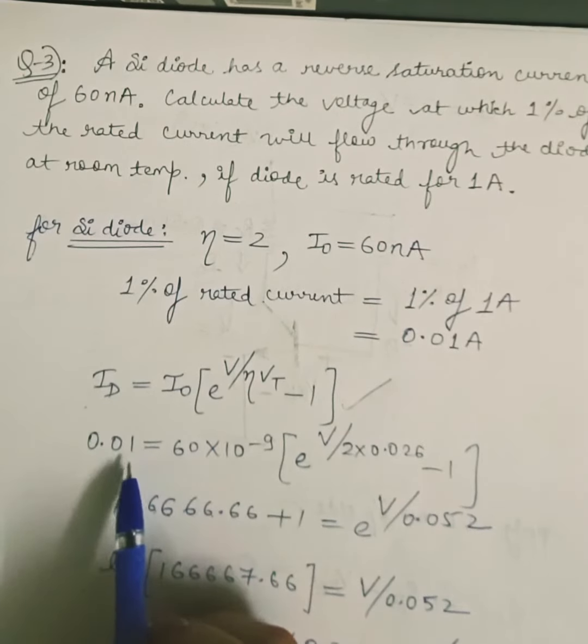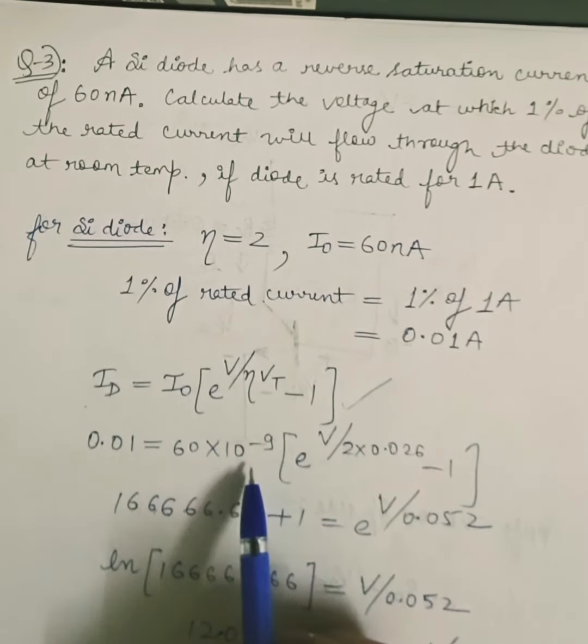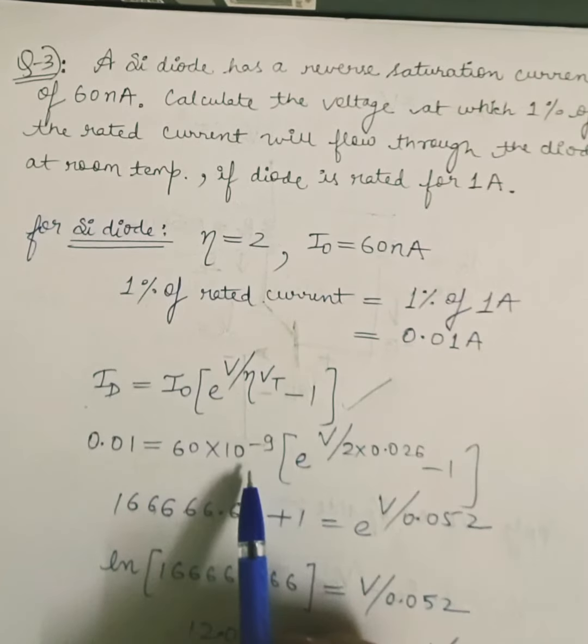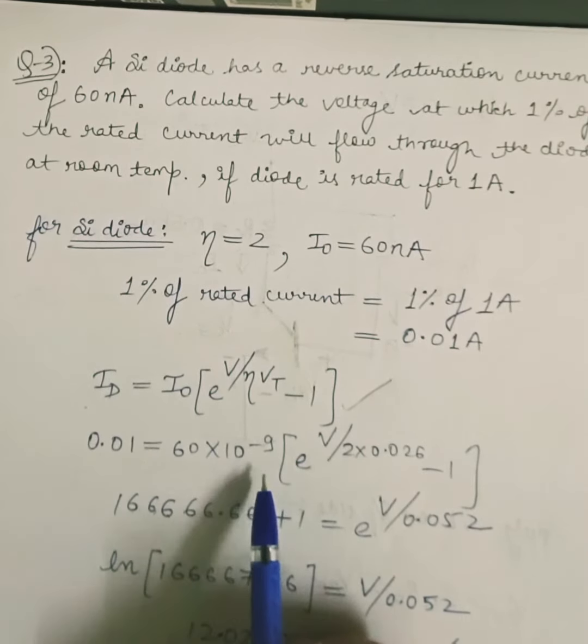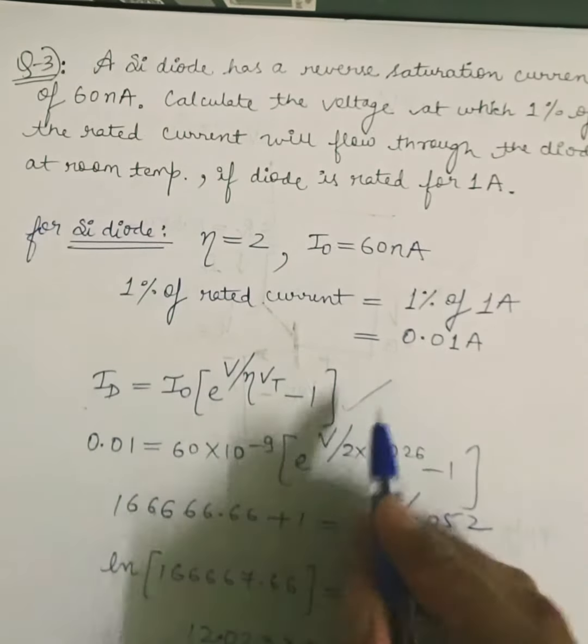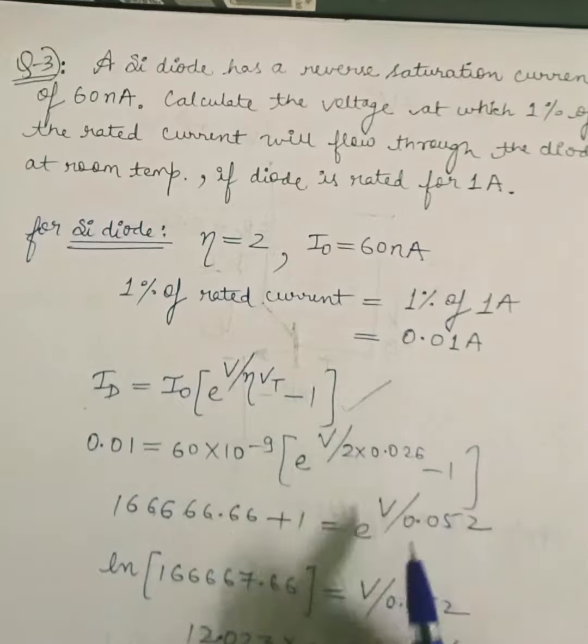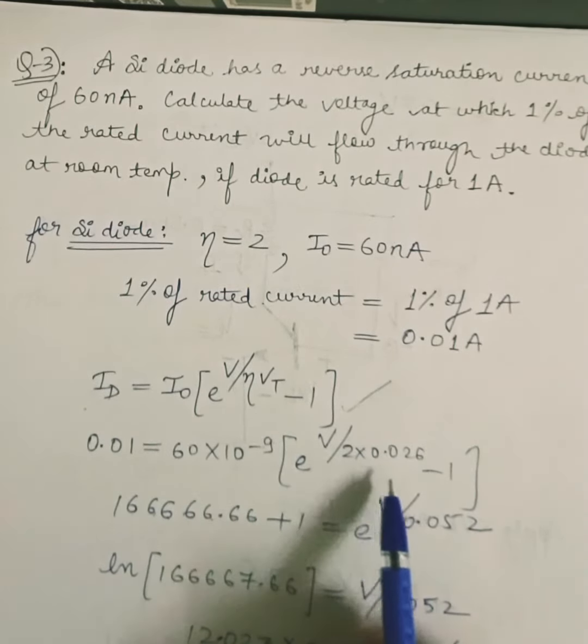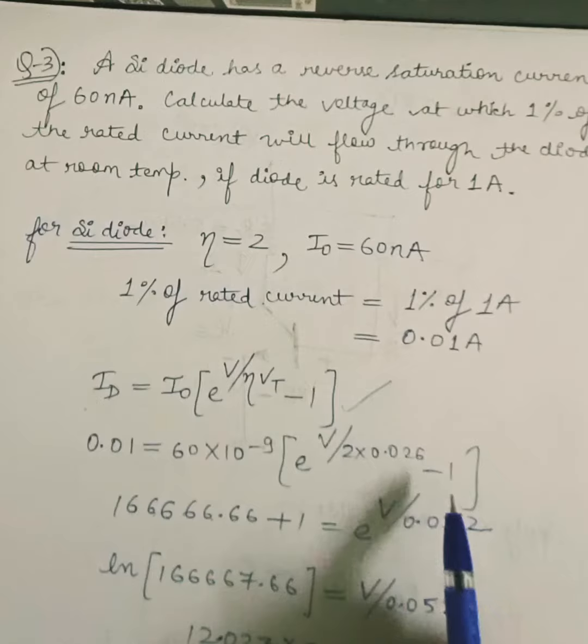We know the value of diode current. We know the value of saturation current that is 60 nanoampere, 60 into 10 to the power minus 9. We know the value of eta that is 2. And what is Vt? Vt is thermal voltage and it is 26 millivolt or 0.026 volt at room temperature, minus 1.